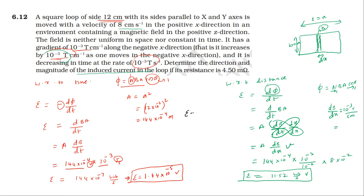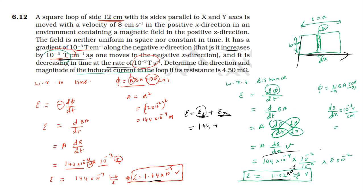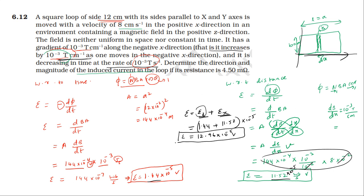If the EMF from time decrease and distance change are both considered: time change gives 1.44 into 10 power minus 5 volt, and distance change gives 11.52 into 10 power minus 5 volt. Adding both: total EMF equals 1.44 into 10 power minus 5 plus 11.52 into 10 power minus 5 equals 12.96 into 10 power minus 5 volt total EMF.